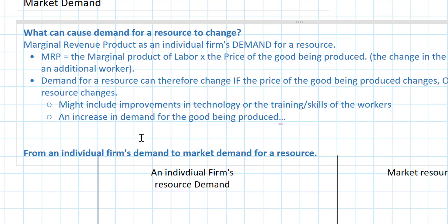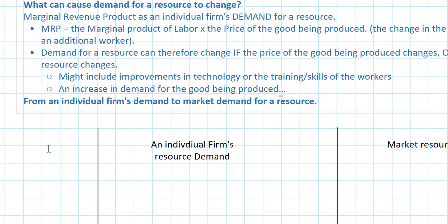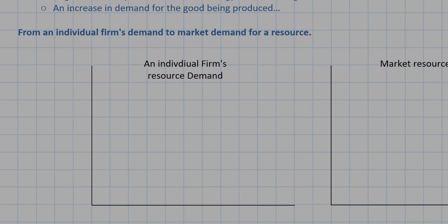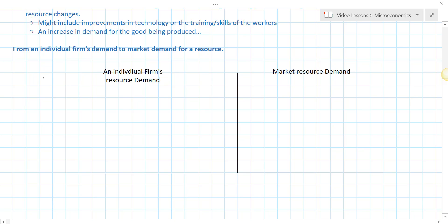So we say the demand for a resource is derived from both the price of the good being produced and the productivity of the resource itself. The next concept is that the total demand for a resource in the market for that resource is made up of the sums, or the combinations, of all the individual firms' demands. In the last video we showed how marginal revenue product determines the wage rate that firms are willing to pay additional workers, and that generally decreases due to the diminishing marginal returns of labor.